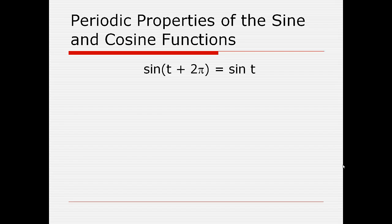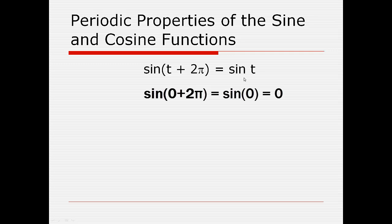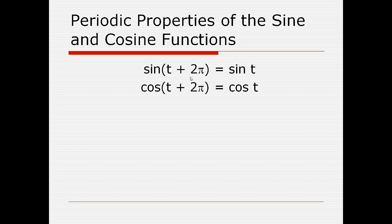The sine function, if we take any value t for the input and add 2 pi to it, we're going to get the same value for the sine. For example, the sine of 0 is the same as the sine of 0 plus 2 pi. The sine of 0 is 0, and the sine of 2 pi is also 0. This is true for any other value of the sine function. The same is true for cosine — the cosine of any value in the domain plus 2 pi is equal to the cosine of that point in the domain.